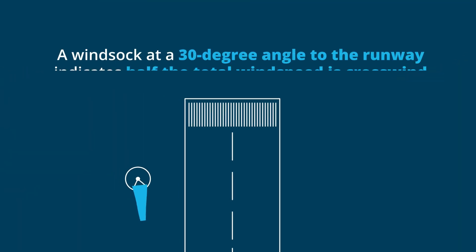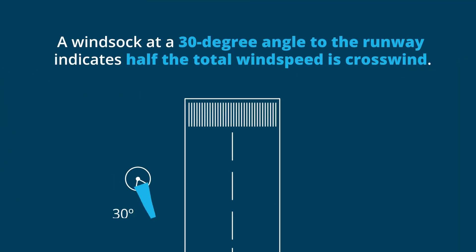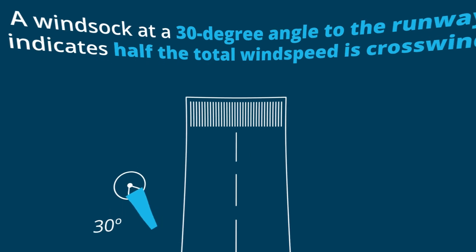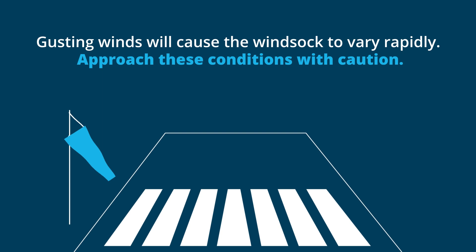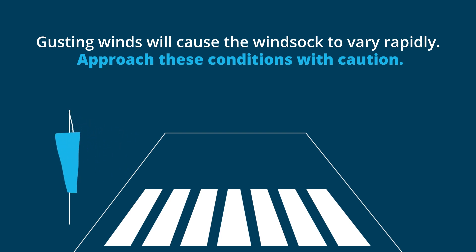A windsock at a 30-degree angle to the runway indicates half the total wind speed is crosswind. Gusting winds will cause the windsock to vary rapidly — approach these conditions with caution.